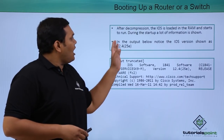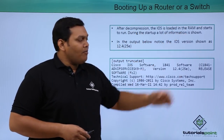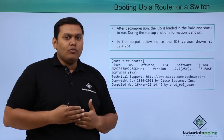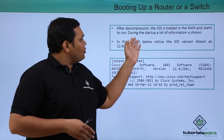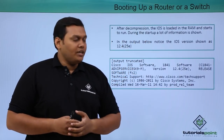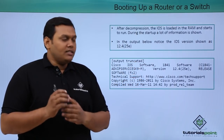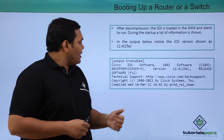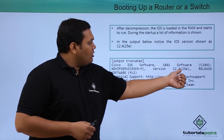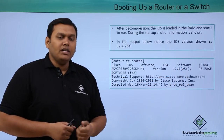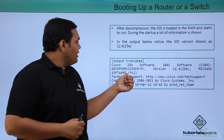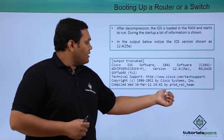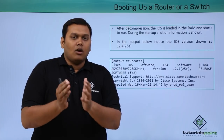After decompression, the IOS is loaded into RAM and starts to run. The configuration file is taken from the non-volatile RAM and it starts to run. During startup, a lot of information is shown — you can see details like Cisco software of the 1841 router, version 12.4(25E), the release FC2, technical support information, and router details.